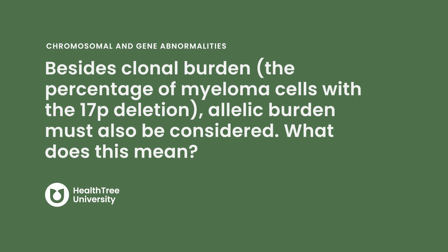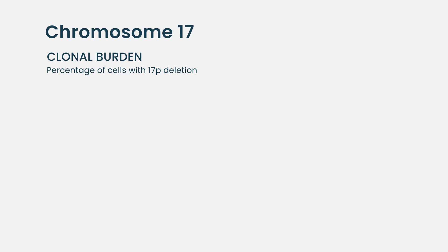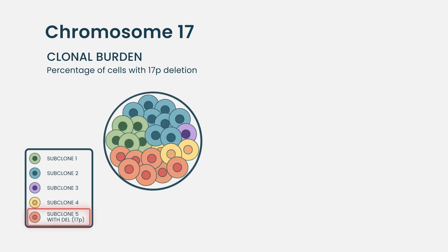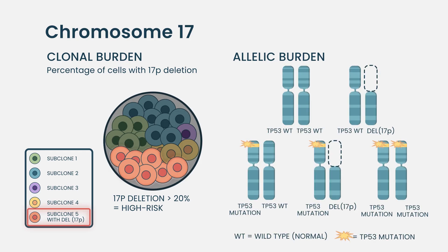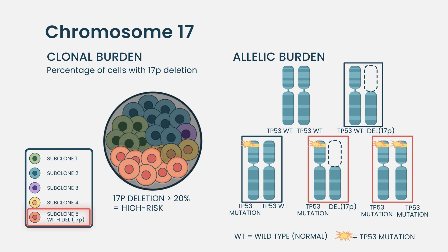Besides clonal burden — the percentage of myeloma cells with a 17P deletion — allelic burden must also be considered. Clonal burden asks: of all your myeloma cells, what percentage have the abnormality? Currently, 20% is the consensus threshold for high risk. Allelic burden asks a different question: within a given cell, you have two chromosomes — are you missing the deletion on one or both? That's monoallelic or biallelic. This also matters, and whether they are mutated requires next-generation sequencing.